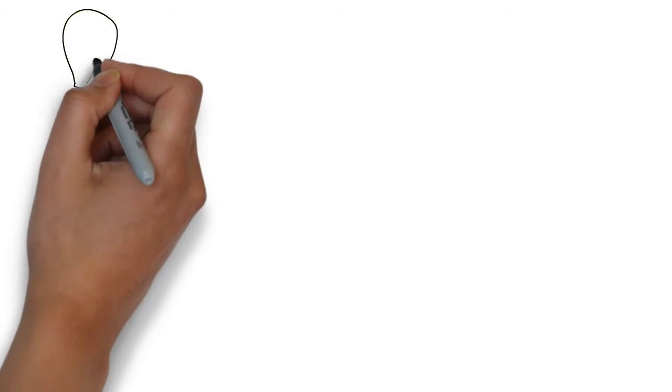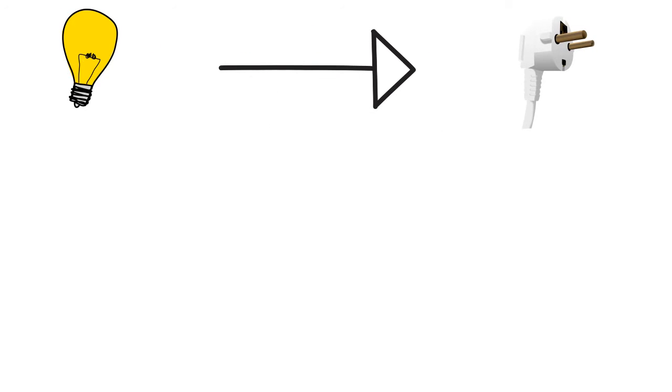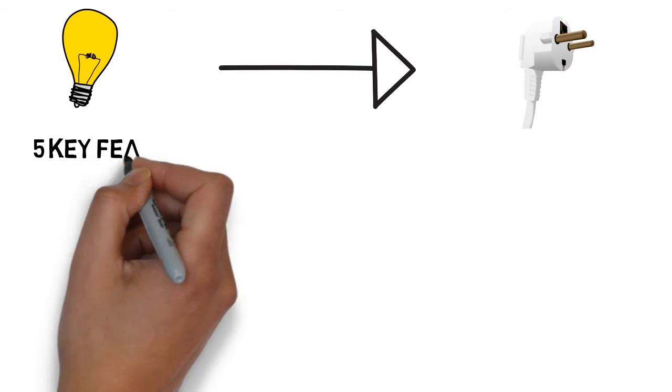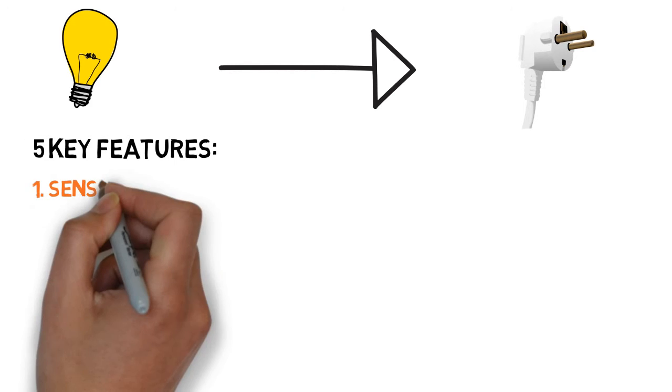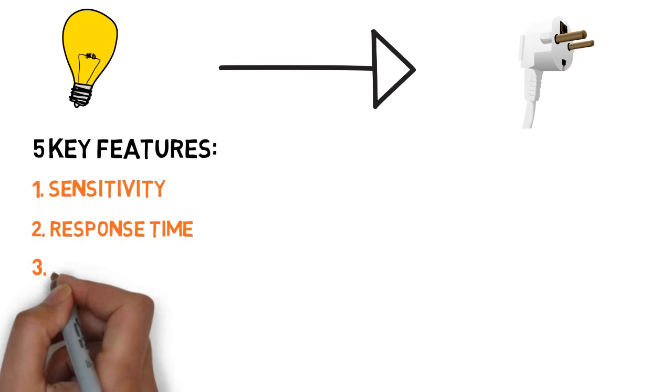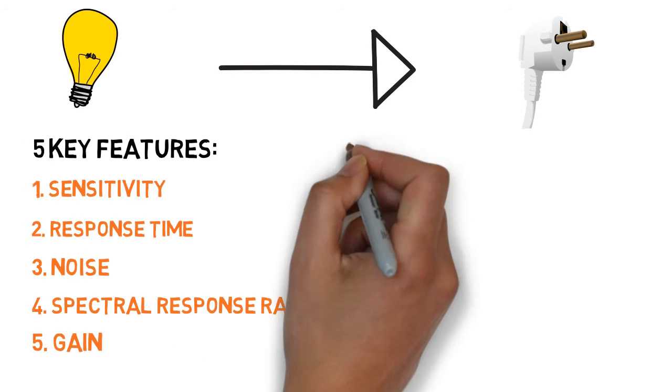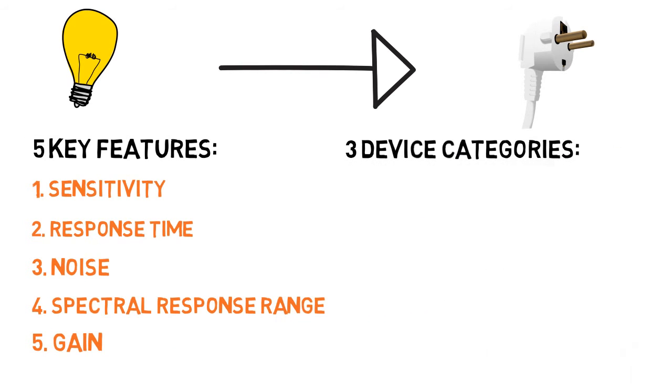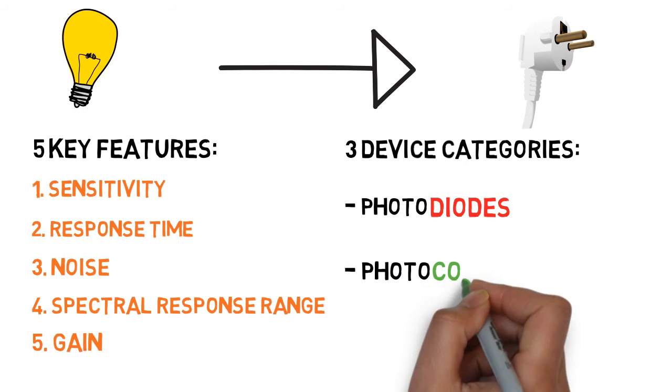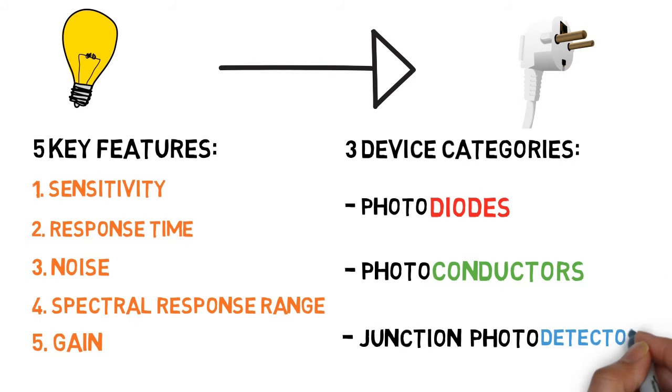In conclusion, optical detectors transform optical signals into electrical ones. Each device is defined according to its sensitivity, response time, noise level, spectral response range, and gain. The three broad categories of devices are photodiodes, photoconductors, and junction photodetectors.